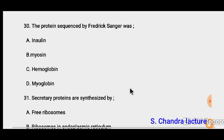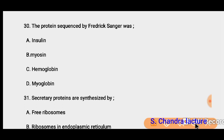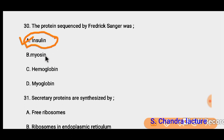Question 30: The protein sequenced by Frederick Sanger. Frederick Sanger was a scientist who was the first to sequence a protein. The protein was insulin. He sequenced insulin to determine how many amino acids are present in it and what sequence of amino acids it is made up of.